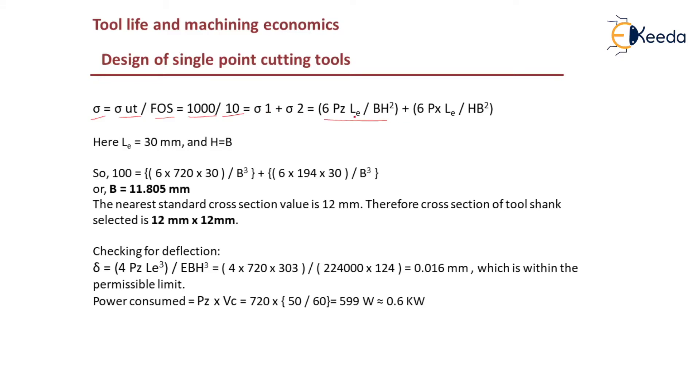Sigma 1 is given by 6 Pz Le divided by bh squared and sigma 2, these are two principal stresses, stress in x direction is given by 6 Px Le divided by h b cubed.